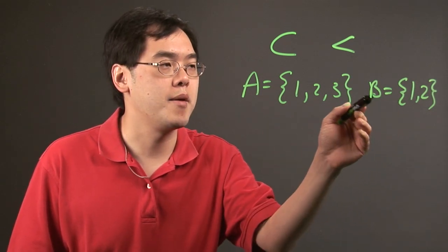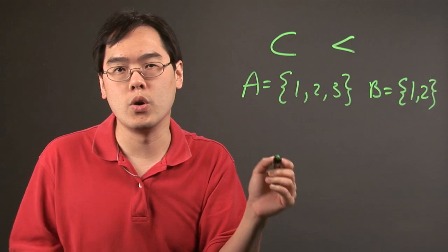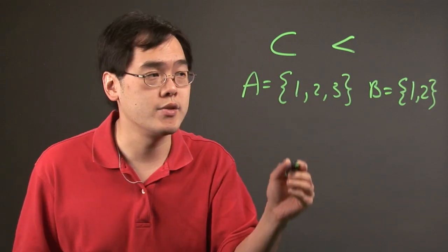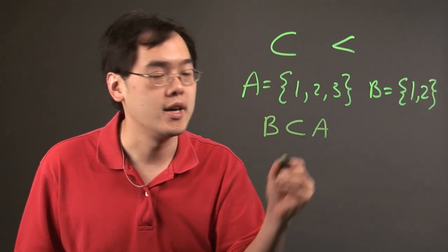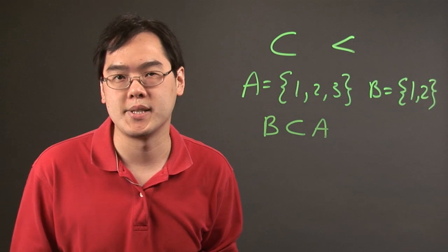So you can make an argument that B is going to be quote-unquote less than A, but since we're using set notation, you can say that B is a proper subset of A. And proper subset equality is not possible.